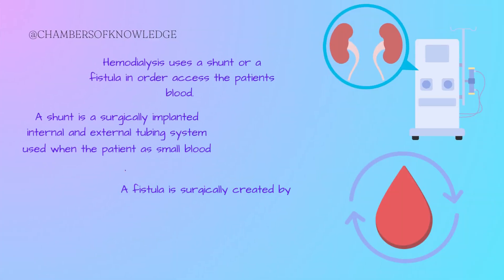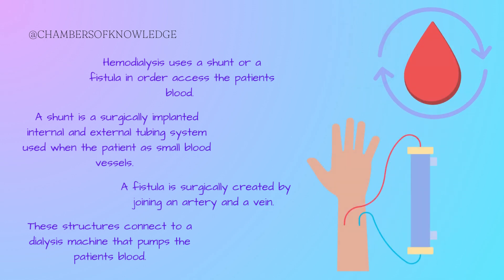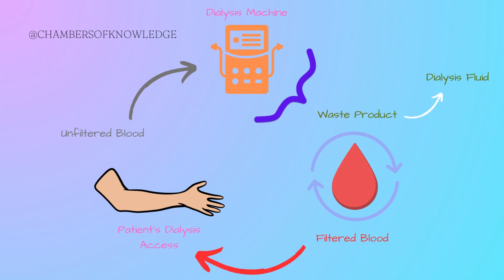This procedure uses a shunt or a fistula in order to access the patient's blood. A shunt is a surgically implanted internal and external tubing system used when the patient's veins are too small. A fistula is a surgically created joining of an artery and a vein. These structures connect to a dialysis pump that filters the patient's blood. The shunt and the fistula are known as a patient's dialysis access.